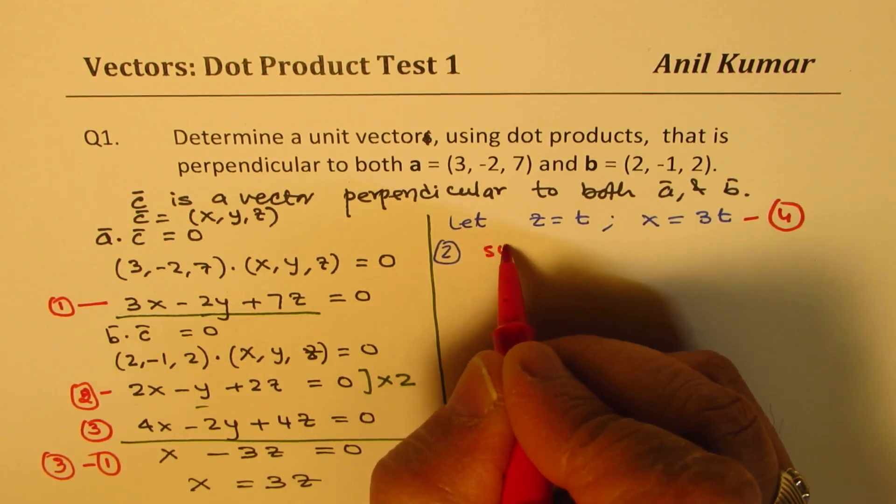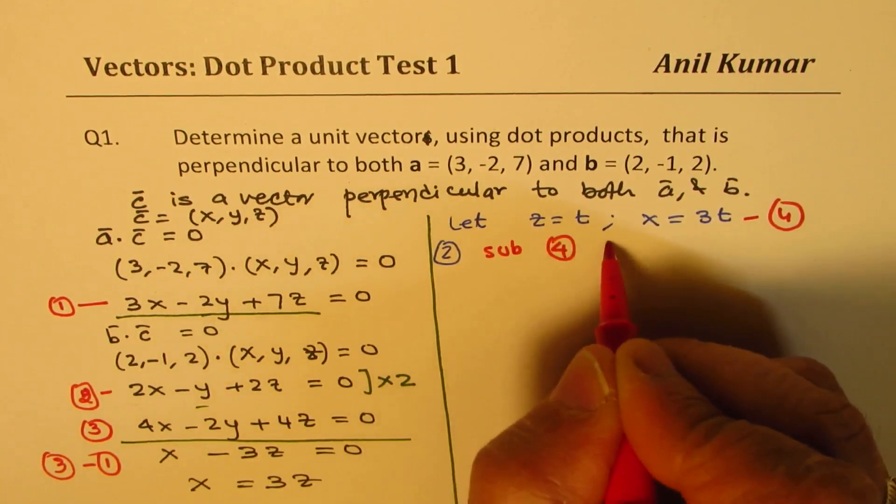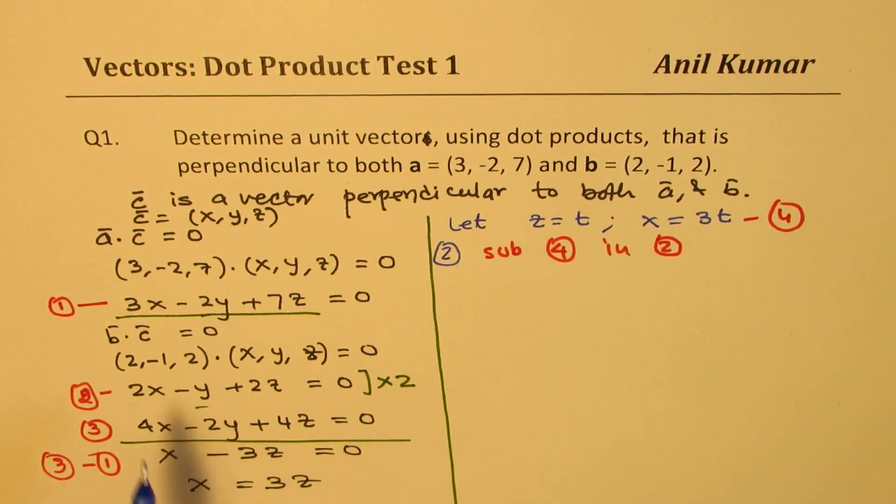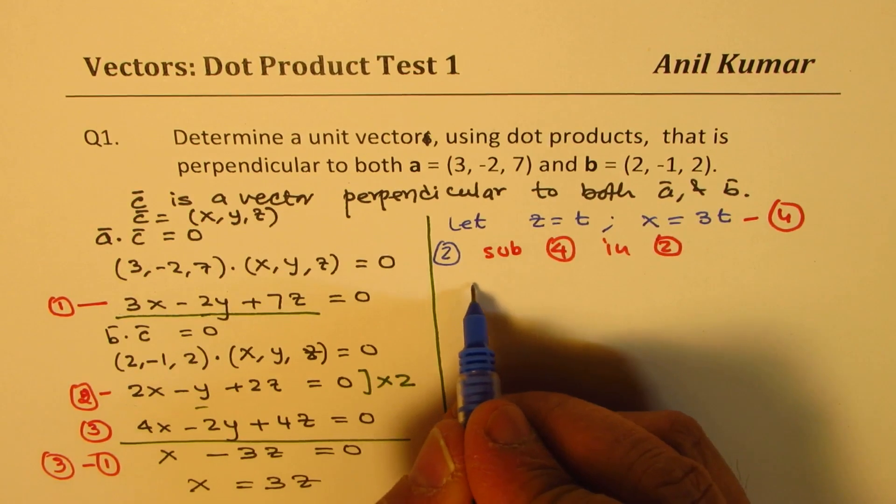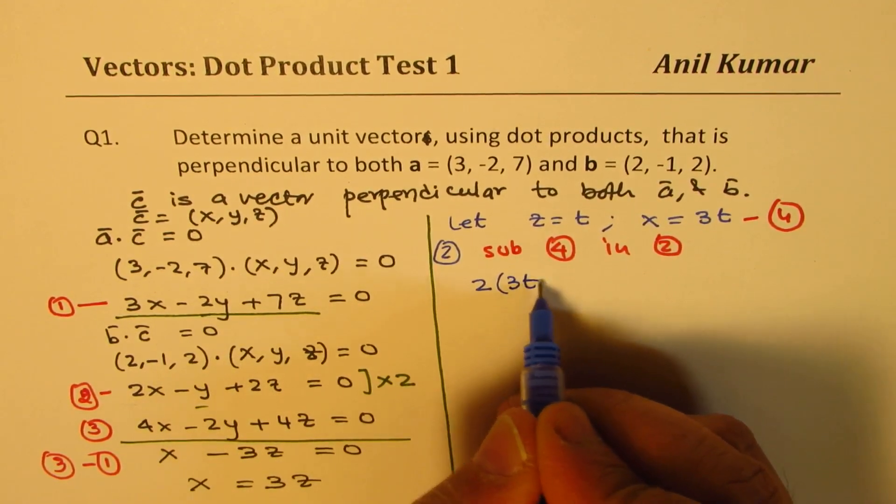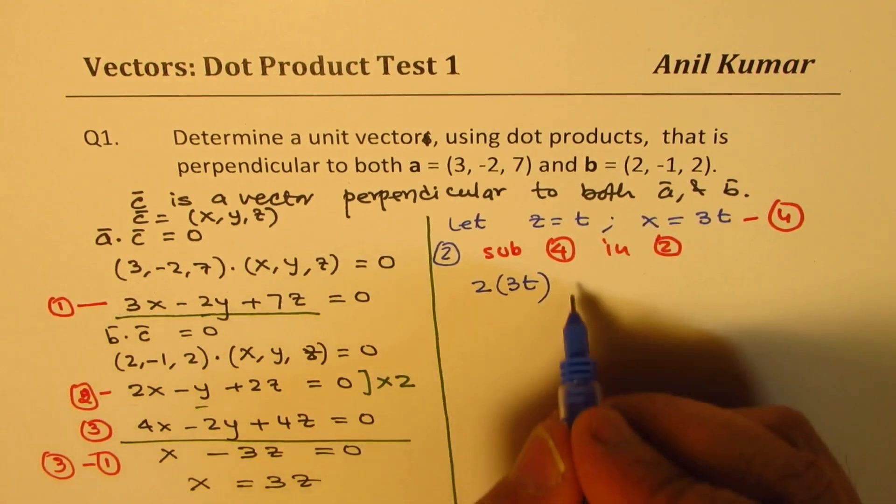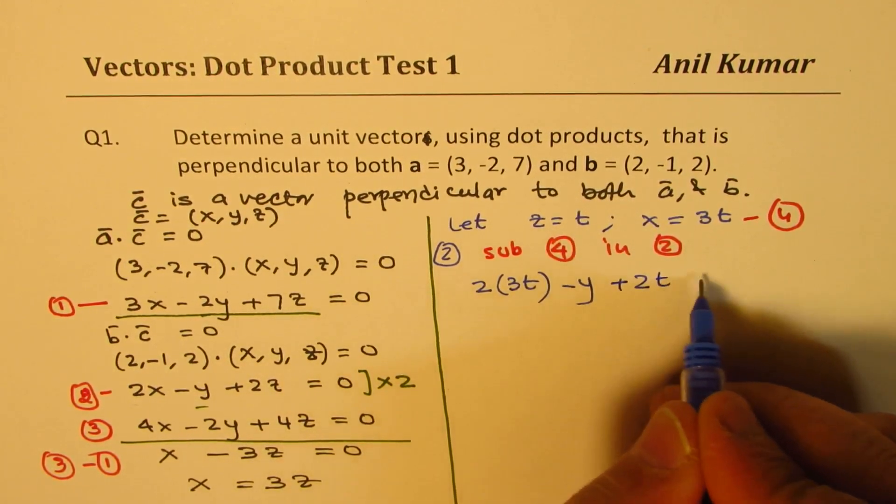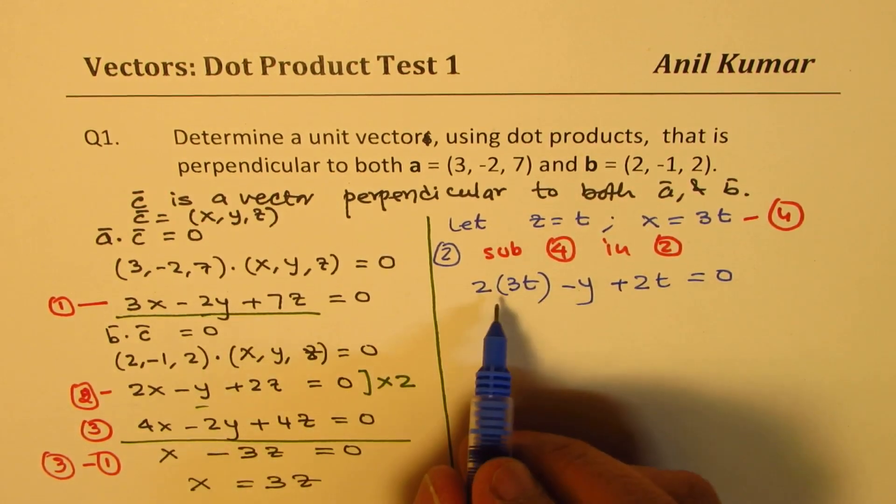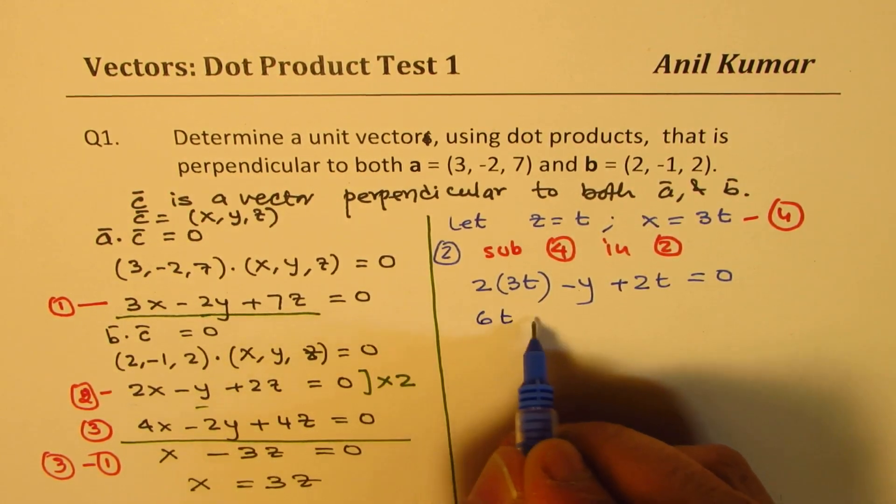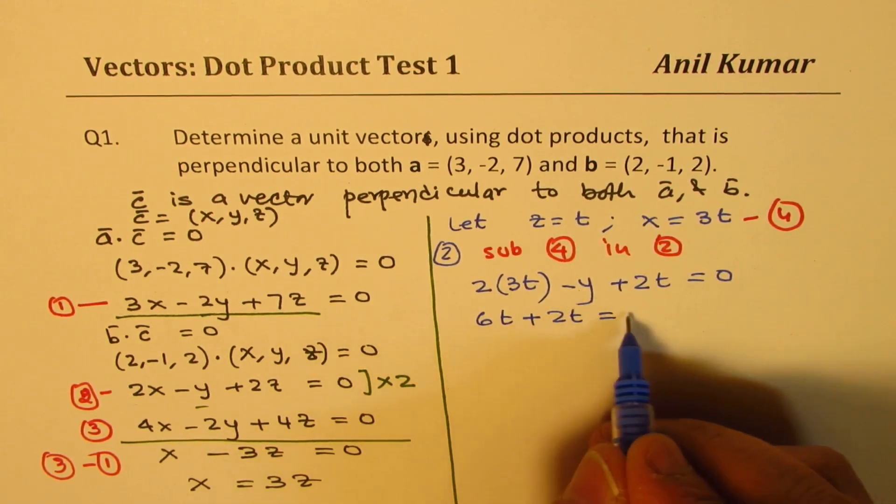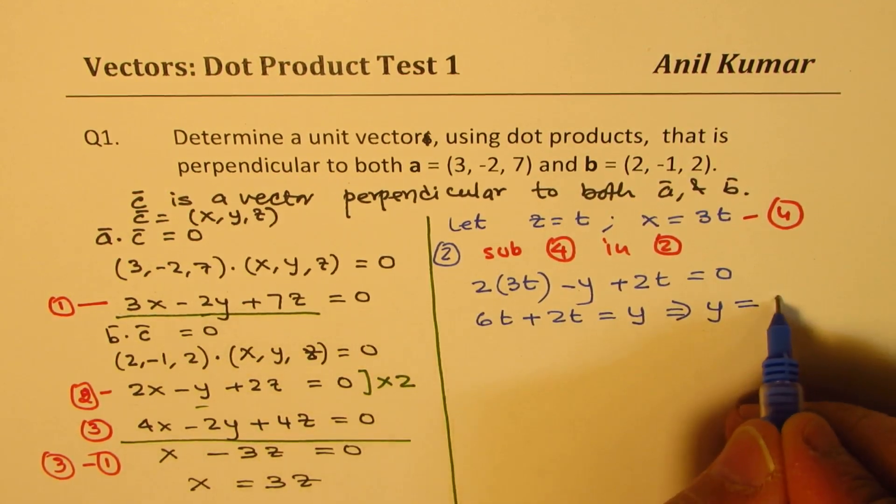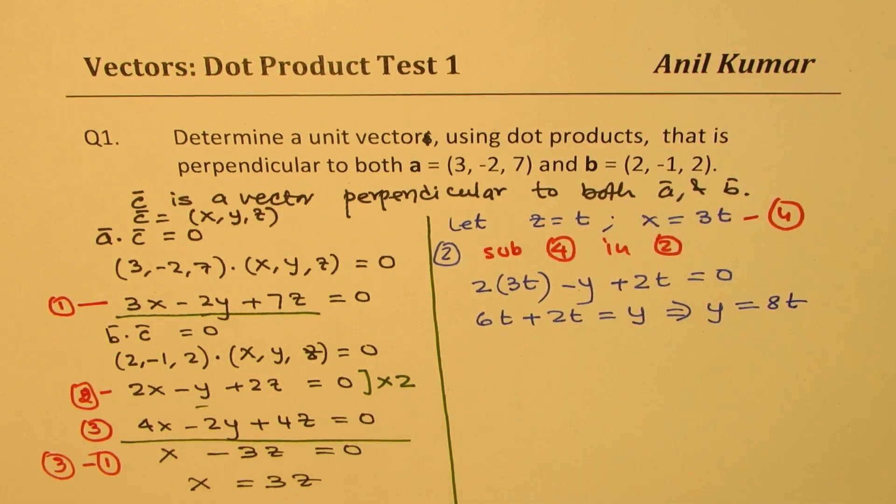So in 2 sub 4 in 2. So 2 is 2x, so we'll write 2 times x is 3t minus y, we don't know what y is, plus 2 times z, and z is t for us. That should be equal to 0. So from here, we can find that 6t plus 2t is basically equal to y, and that implies y is equal to 6 plus 2, 8t.